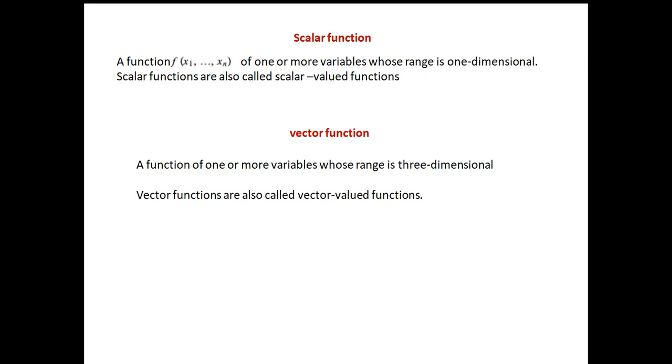Vector function is a function of one or more variables whose range is three dimensional. That means a function will depend upon a variable maybe one or two. However, that particular variable is changing in one dimension only. Supposing I have a flow of water and I am trying to analyze something with it. Then I know I cannot restrict myself to only one dimensions. I have to consider at least three dimensions. In fact, vector function in general can be defined for n dimensions.